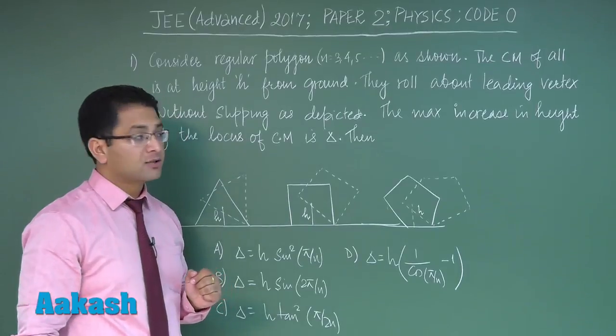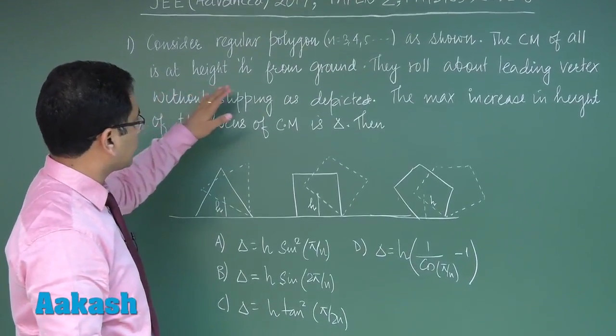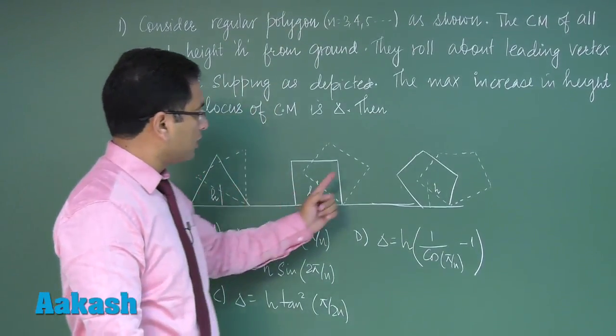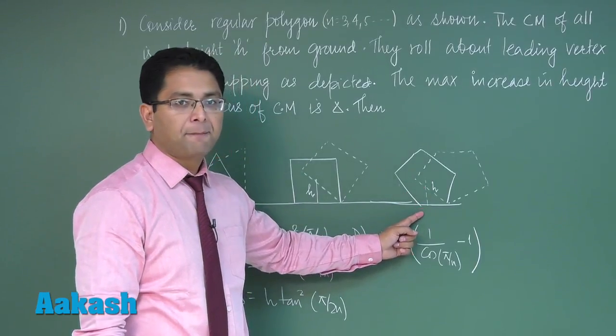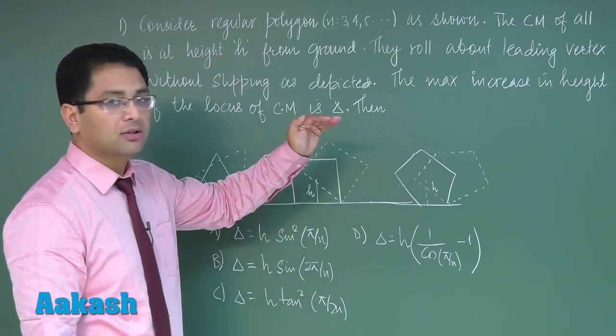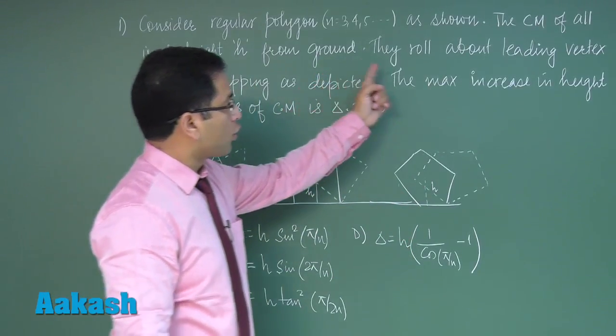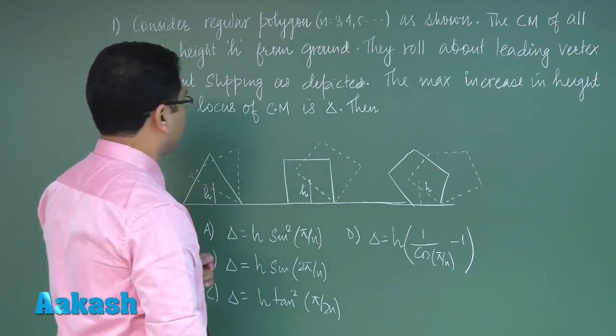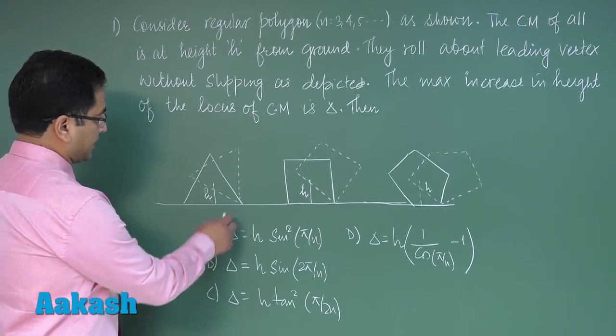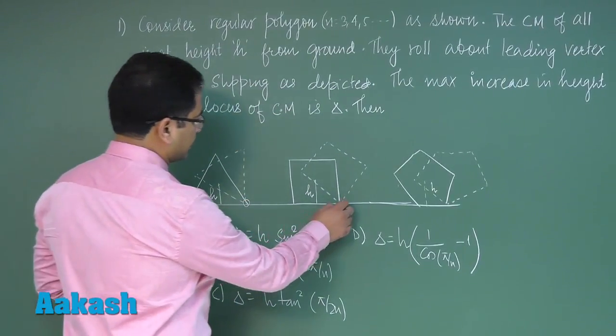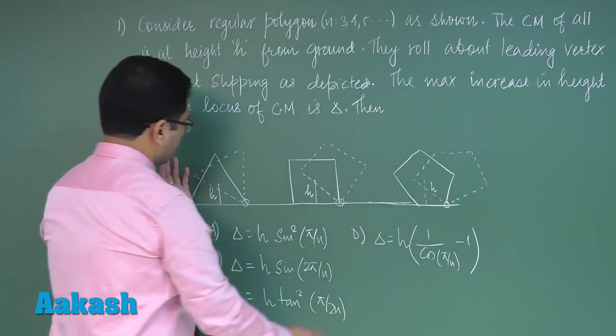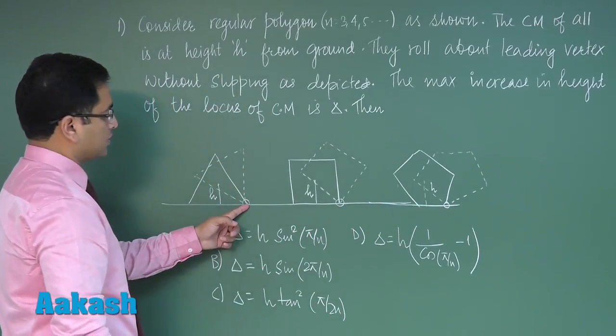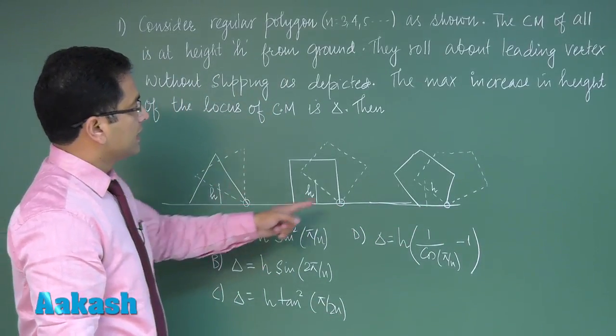Consider regular polygons with all sides 3, 4, 5 as shown. The CM (center of mass) of all is at height h from the ground. They roll about leading vertex without slipping as depicted. So this is the leading vertex and all are rolling without slipping, so this point would be fixed.